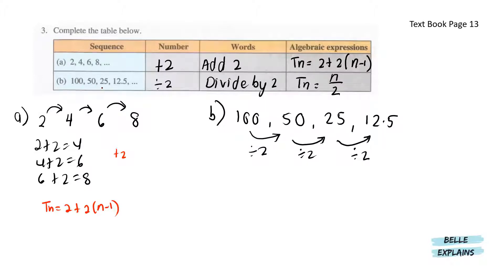And the numbers are being halved, so you divide by 2, divide by 2 and divide by 2. So in the number here, you can write divide 2, in words divide by 2, and Tn is n over 2. Since it's divide, it will be divide by 2.